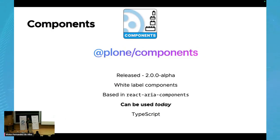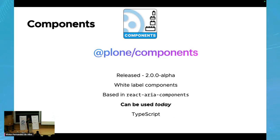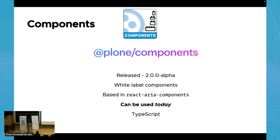Then we have Plum Components, a set of white-label components. It is based on React Aria Components — Adobe's accessible-first component library where you bring your own styling. It can be used today. It has a stable 1.x series, but we are working on a 2.x series which is currently in alpha. We have another World Plum Day talk about Plum Components — check it out, it's very interesting. The most important feature is that you can use it not only in Volto but in any other React project. It's TypeScript and we're working on it.